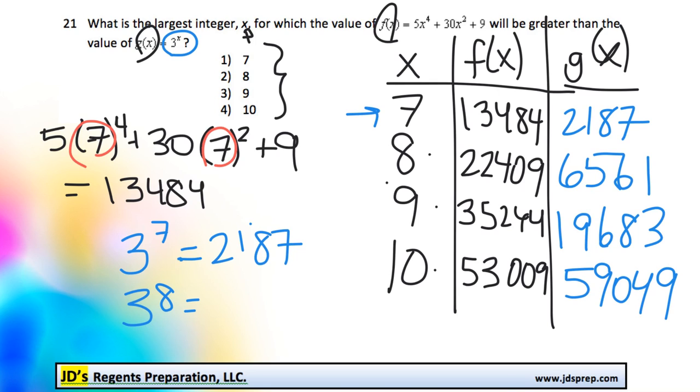Now, what we're trying to find is the largest integer x, so out of these four, the largest one where the value of f(x) is bigger than the value of g(x). So we can see when x is 7, f(x) is bigger than g(x). That's good. Here, when x is 8, it's still bigger.